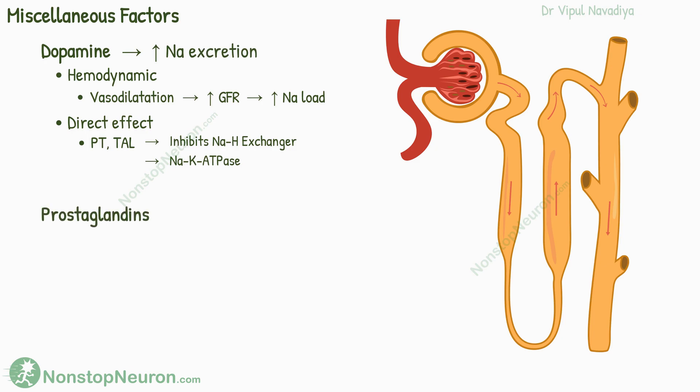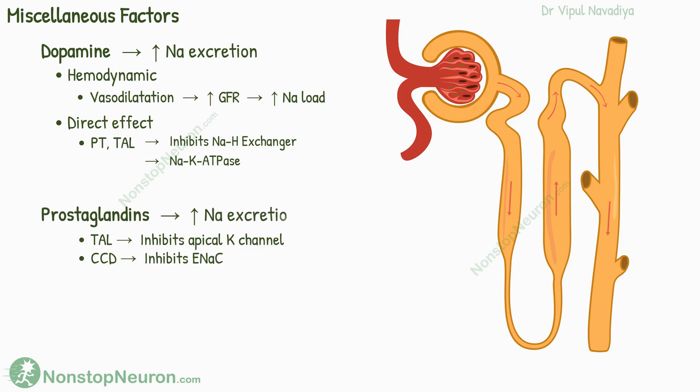Finally, prostaglandins. PGE2 inhibits apical potassium channels in the thick ascending limb. In the cortical collecting duct, it inhibits the activity of the epithelial sodium channel. So there is an increase in sodium excretion.